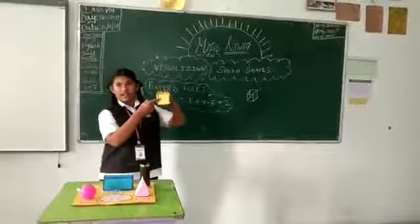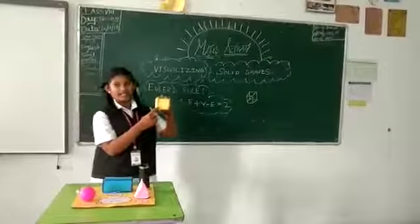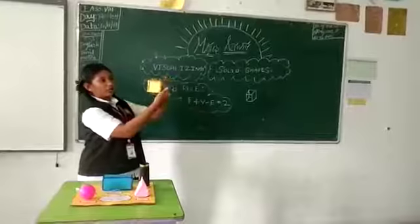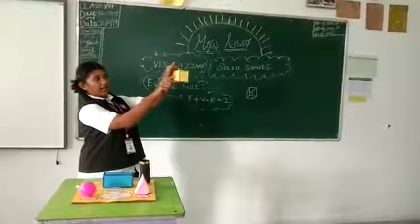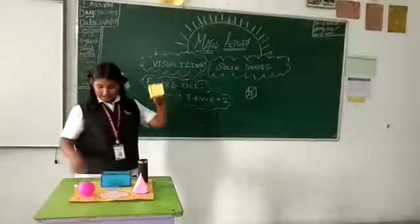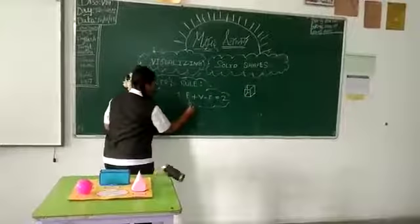This is called a face. A cube has 6 faces: 1, 2, 3, 4, 5, 6. Cube has 6 faces.